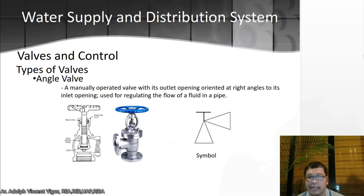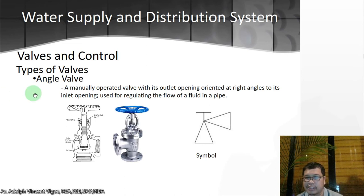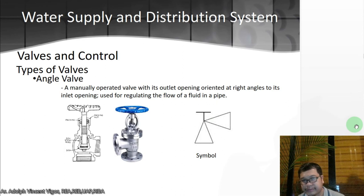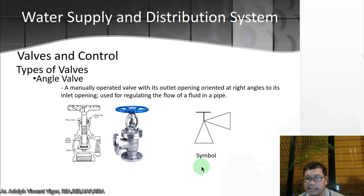Then you have an angle valve — a manually operated valve with its outlet opening oriented at right angles to its inlet opening, used for regulating the flow of fluid in a pipe. The general purpose of valves is to regulate fluid within a pipeline. You use this when you want a change in direction — for example, a pipe going one way that then moves in another direction — depending on how you design your plumbing system.